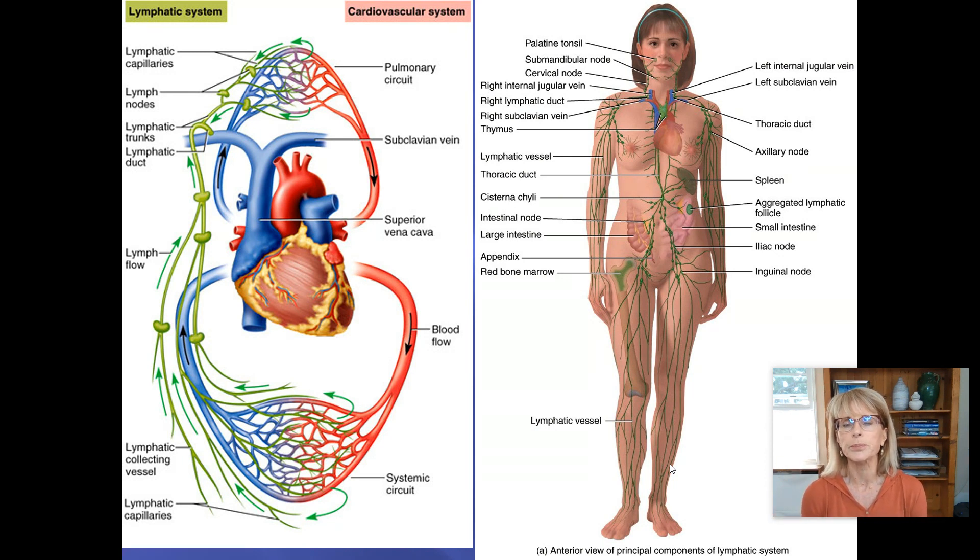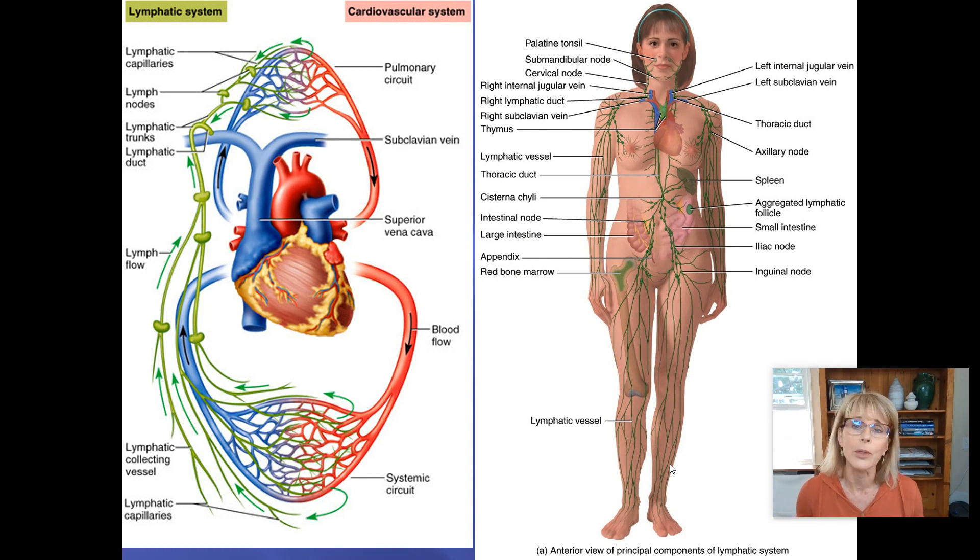Even really small children are familiar with the idea that we've got a heart and we've got blood. They've seen blood, you can see blood vessels, and you can feel your heart beating. But almost no one really thinks about the lymphatic system. Frankly, I don't think about it that much. However, there is a second, entirely separate series of tubes that are carrying a clear liquid that is under very low pressure.